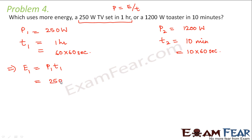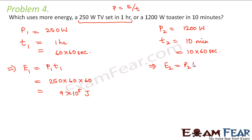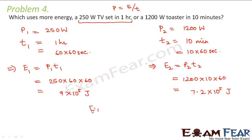So energy for the television is 250 into 60 into 60, which comes out to be 9 into 10 to the power 5 joules. For the toaster, energy will be equal to 1200 into 10 into 60, which comes out to be 7.2 into 10 to the power 5 joules. Comparing E1 with E2, we see that E1 is greater than E2, meaning the television set uses more energy than the toaster.